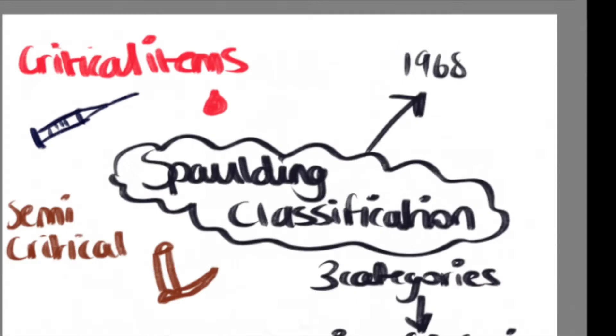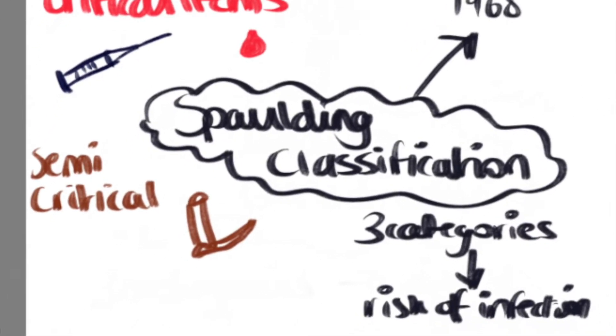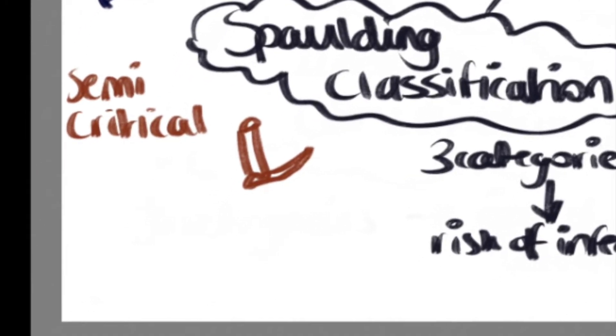Semi-critical items contact mucous membranes and non-intact skin only. Items include breathing circuits, fiber optic scopes and laryngoscopes.